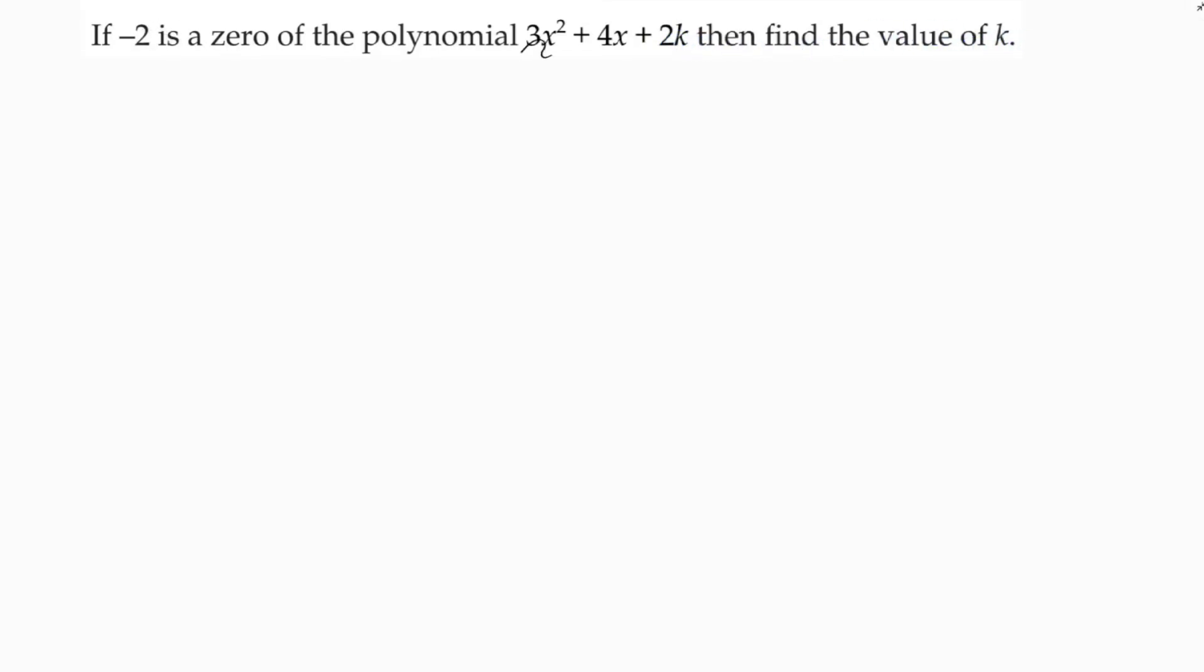So in place of x, if I substitute minus 2, then the value of the polynomial is 0. Here the polynomial is 3x squared plus 4x plus 2k.